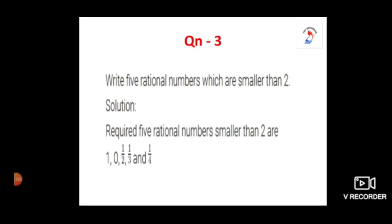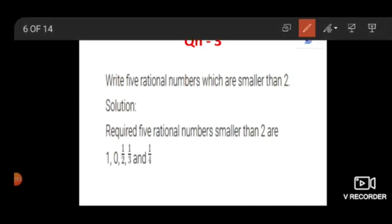Question number 3: write 5 rational numbers which are smaller than 2. The required 5 rational numbers which are smaller than 2 are: first, 1. Yes, 1 is a rational number — it can be written in the form 1 by 1. The next one is 0. Again, 0 is also a rational number; we discussed in part 1 introduction that 0 is a special kind of rational number. The next numbers are 1 by 2, 1 by 3, and 1 by 4. To conclude, the required 5 rational numbers smaller than 2 are 1, 0, 1 by 2, 1 by 3, and 1 by 4.